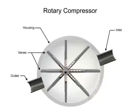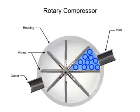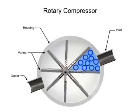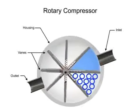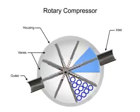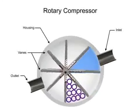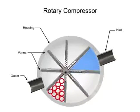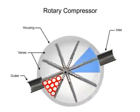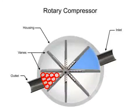Air enters at the largest chamber. As the vanes rotate, they retract, causing the chamber to get smaller and compress the air. Air exits at the smallest chamber.